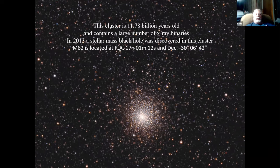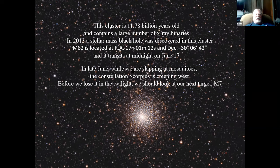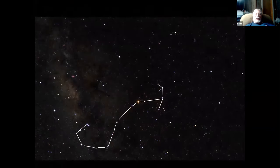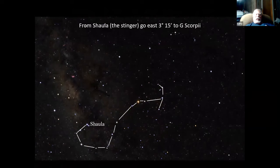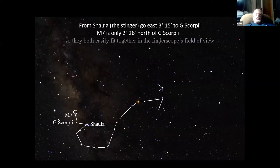There's the location of M62 for those with computer telescopes. But if you're doing the star hopping, it should be fairly easy to find. Dick lists the transit time at midnight on June 17. In late June, the constellation Scorpius is creeping west. If you're out looking at that one, you should also look at M7 in Scorpius. The stinger star is called Shaula, then you go just three degrees, 15 minutes to G Scorpii, and M7 is only a little bit north of that, about two degrees.